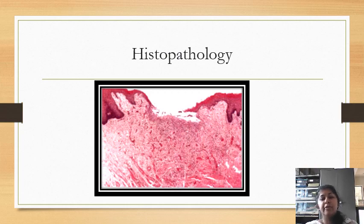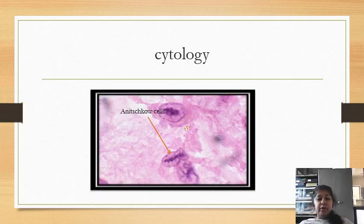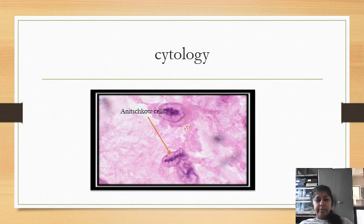Coming to the histopathology of recurrent aphthous stomatitis — the histopathology is characteristic but not pathognomonic. You can see the central area of ulceration surrounded by a fibrinopurulent membrane, and deep to the connective tissue there are numerous vascular channels and mixed chronic inflammatory cell infiltration. In exfoliative cytology, cells referred to as Anichkov cells can be seen — these consist of elongated nuclei containing a linear bar of chromatin with radiating processes extending towards the nuclear membrane, and are quite abundant in patients with recurrent aphthous stomatitis.